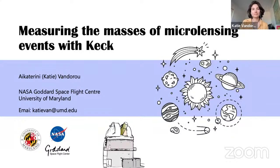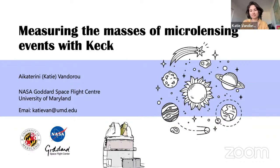Welcome to the next Tuesday seminar at the University of Warsaw Astronomical Observatory. Today we have a speaker from the US, Katie Vandoru, who is a fellow at NASA Goddard Space Flight Center and the University of Maryland. Katie is originally from Greece, but she studied in the UK, Australia, and did her PhD in Tasmania. She's working on microlensing of planets and is going to tell us about how to measure masses of events with Keck.